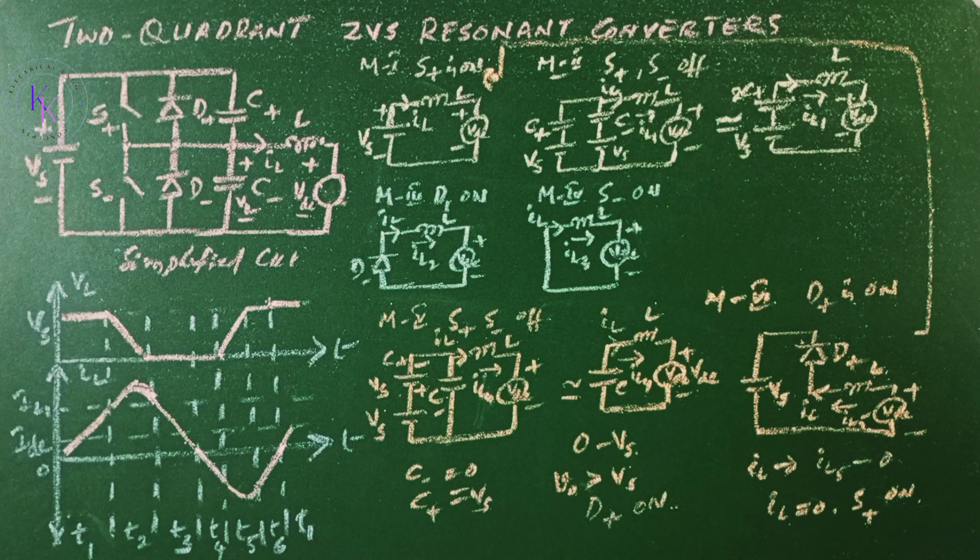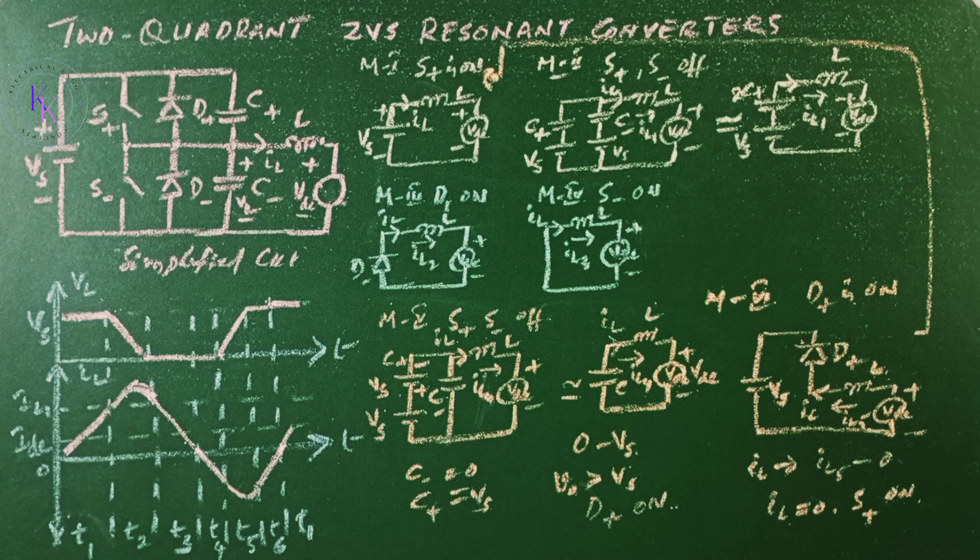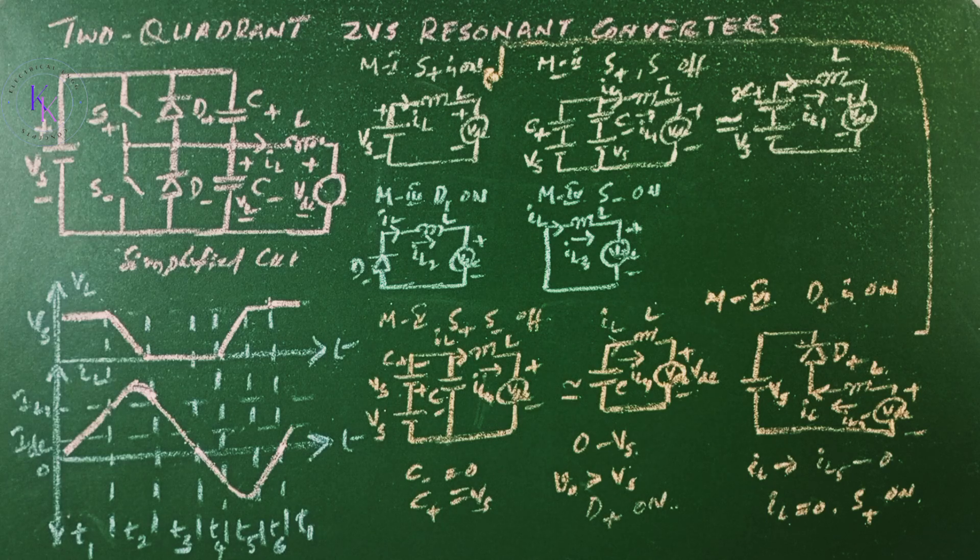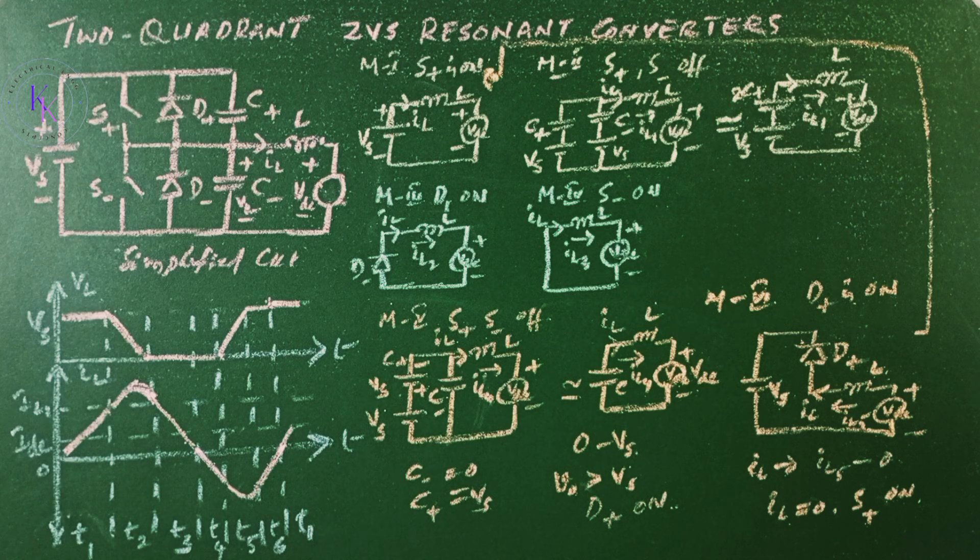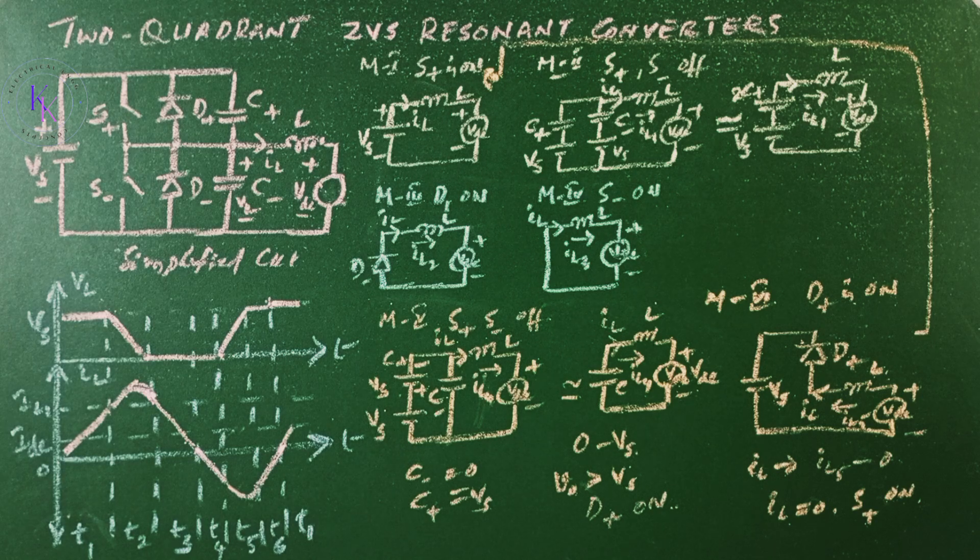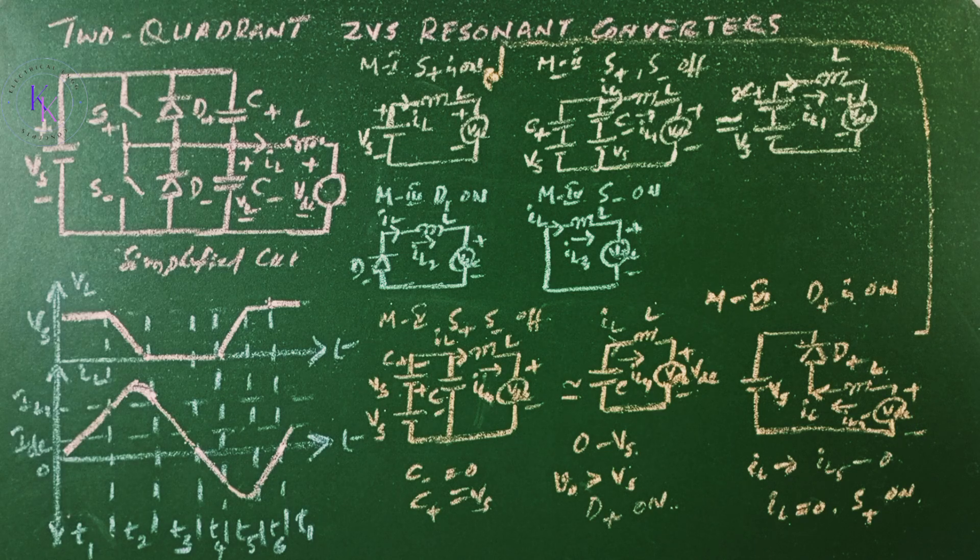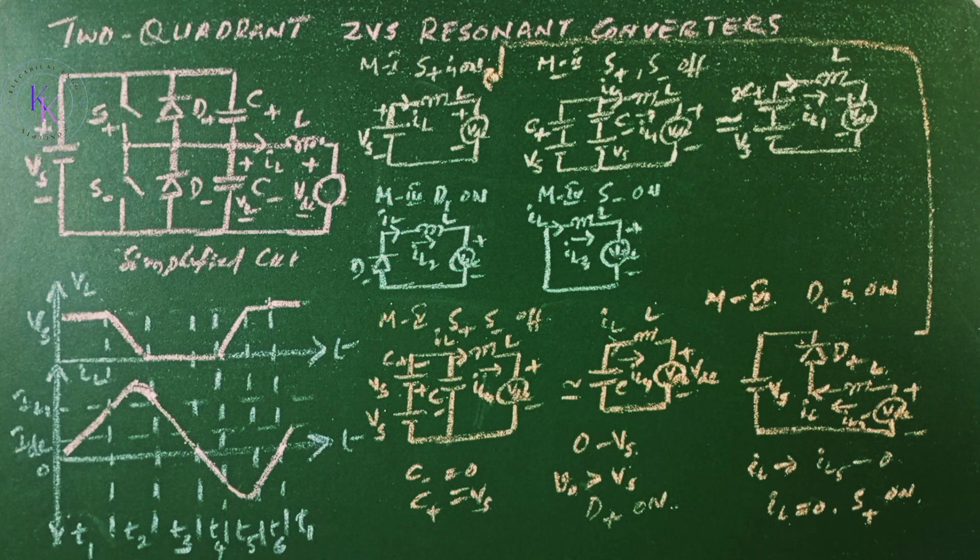For zero voltage switching IL must flow in either direction so that a diode conducts before its switch is turned on. The output voltage can be made almost square wave by choosing the resonant frequency F0 much larger than the switching frequency Fs. The output voltage can be regulated by frequency control. The switch voltage is clamped to only Vs. However, the switches have to carry IL which has high ripples and a higher peak than the load current I0. The converter can be operated under current regulated mode to obtain the desired waveform of IL.